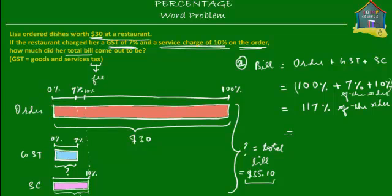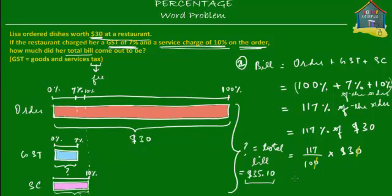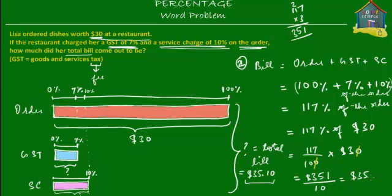What is 117% of the order? That means 117% of $30, which is 117/100 times $30. Simplifying: the zeros cancel, giving 117 times 3. Working that out: 3 times 7 is 21, carry 2; 3 times 1 is 3 plus 2 is 5; 3 times 1 is 3 — giving 351 divided by 10, which equals $35.10. Method 2 gives the same answer as method 1.